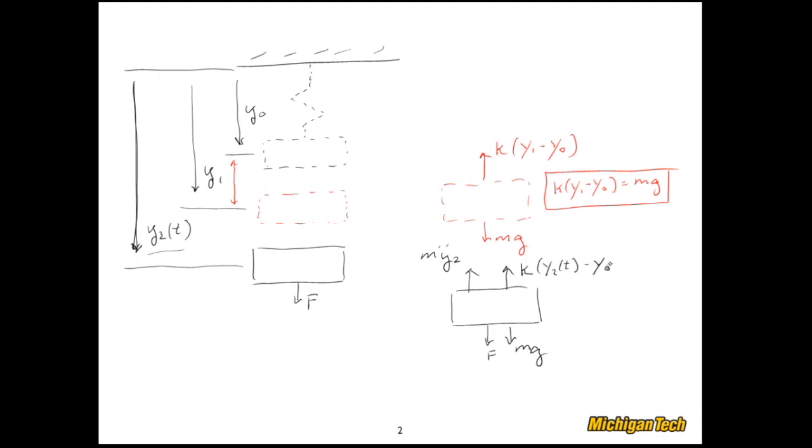Then it's going to be y2, which is a function of time. I'll just put that in just for a minute to be a bit verbose about it, minus that constant y0. So I can write out the equations from this free body diagram as m y2 double dot plus k times y2 minus y0 equals mg plus f.